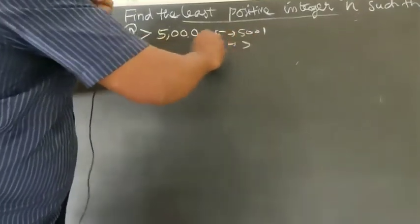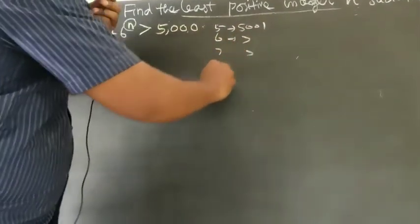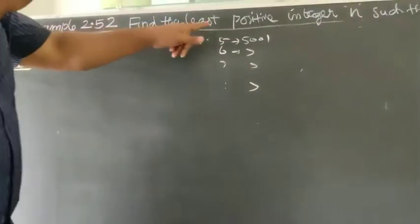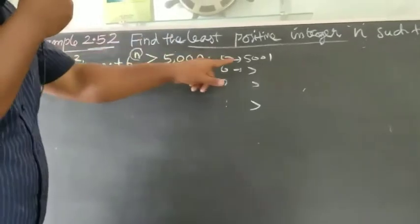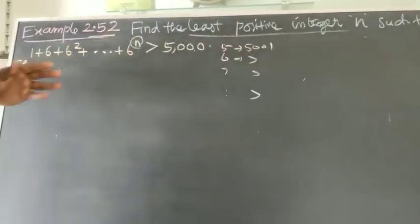Find the least positive integer n. The least positive integer - what value should be above 5,000?